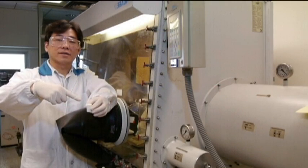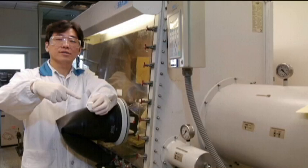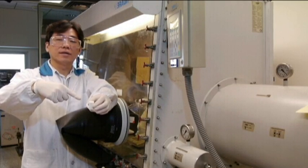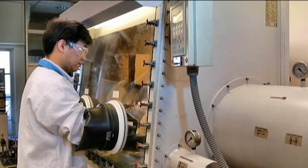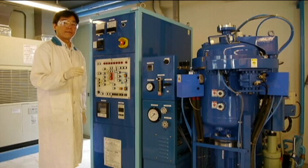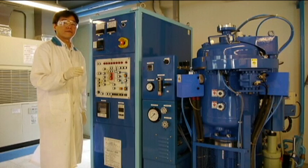The nitride-based precursors including calcium nitride, aluminum nitride, silicon nitride and europium nitride were weighed in the glove box. The nitride-based compound were synthesized by the high-pressure furnace.